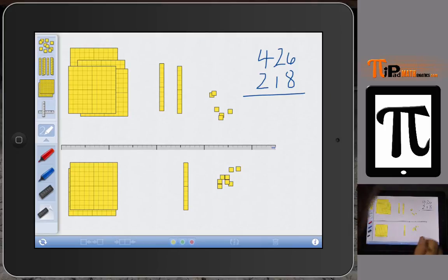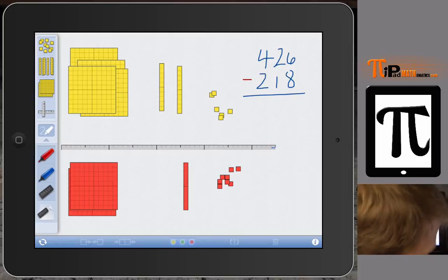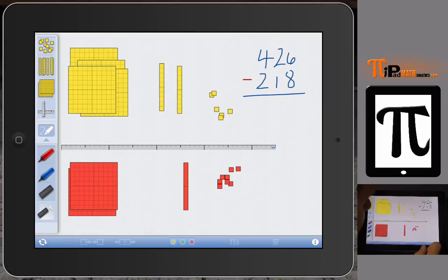So we have 426. And now what we want to do is we want to subtract. And one visual cue for our young students is we could turn all these red. And so now what we have is we have 426 minus 218. That means we are removing, we are taking away 218 from 426.